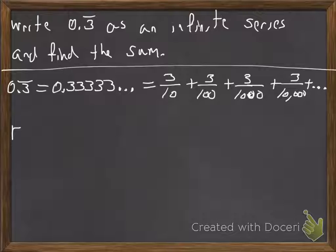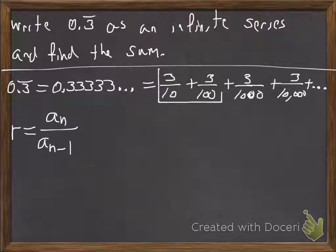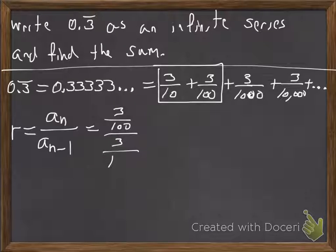Take the second one and divide it by the first one, okay? So that's an over an minus 1. So if we group the first two, it's going to be 3 over 100 divided by 3 over 10.